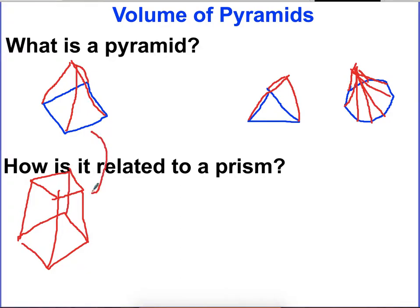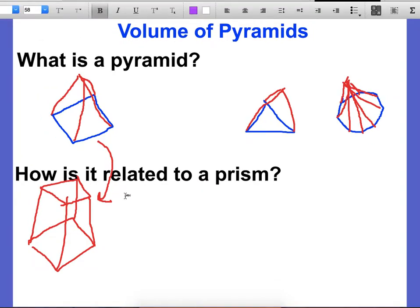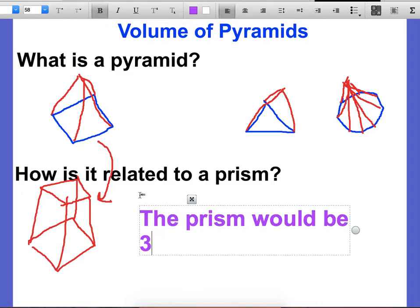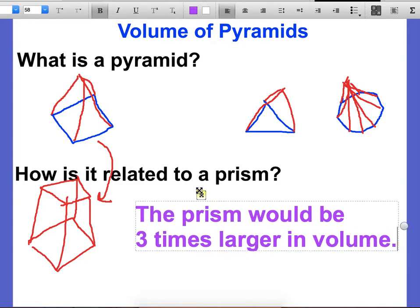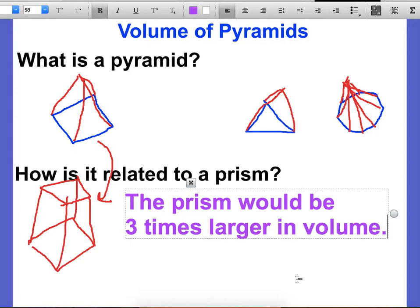If I'm looking at how these are related, it does have a special relation. The volume of this compared to this - this is three times bigger than this. So the prism would be three times larger in volume. So we're going to take a look at an example side-by-side with that and see how that works.